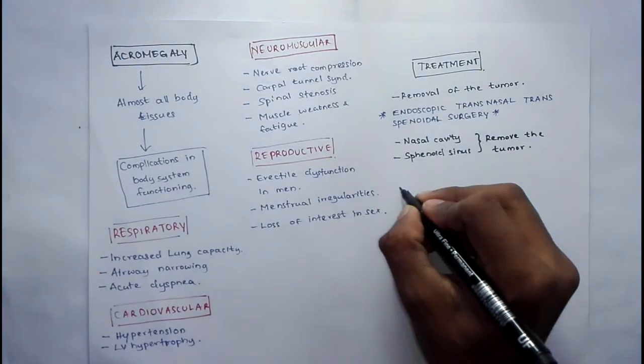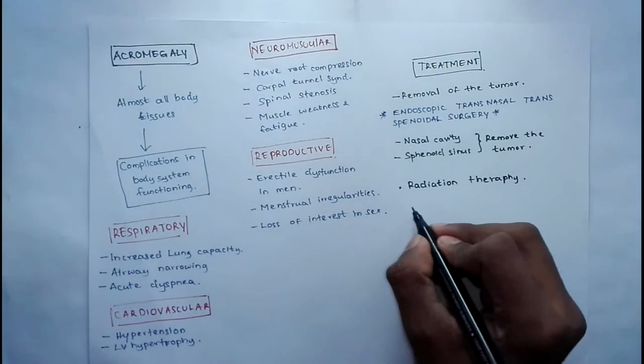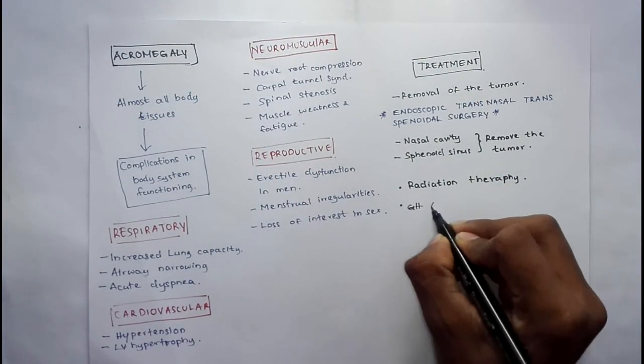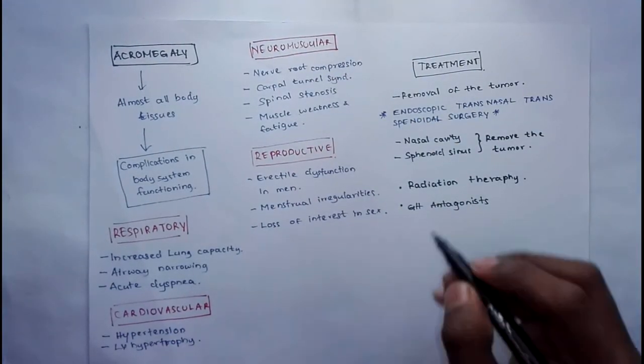When the surgical therapy is not possible, radiation therapy is used to remove the tumor. And for some people, they are given growth hormone antagonists such as somavert.